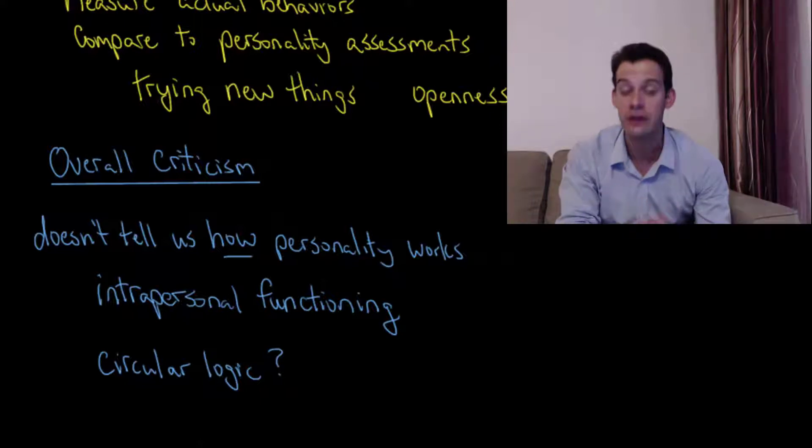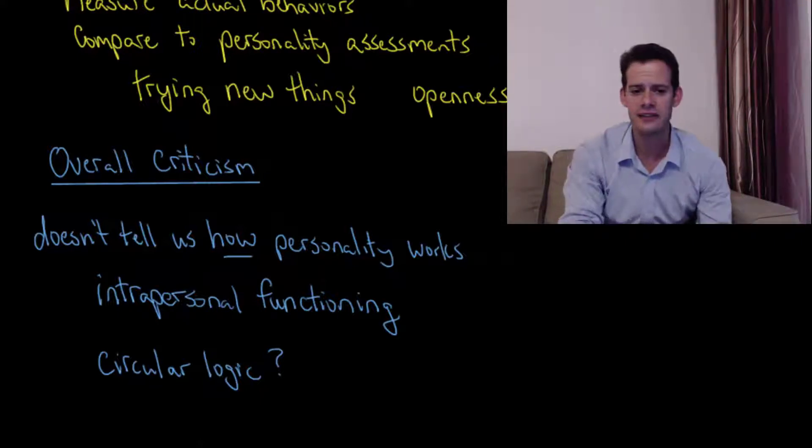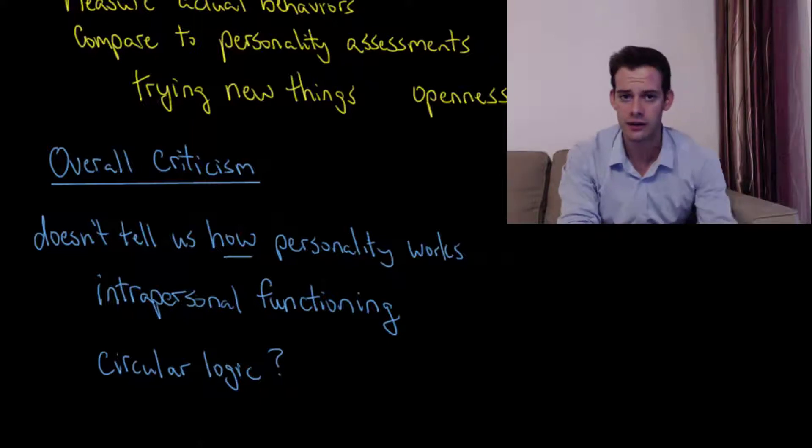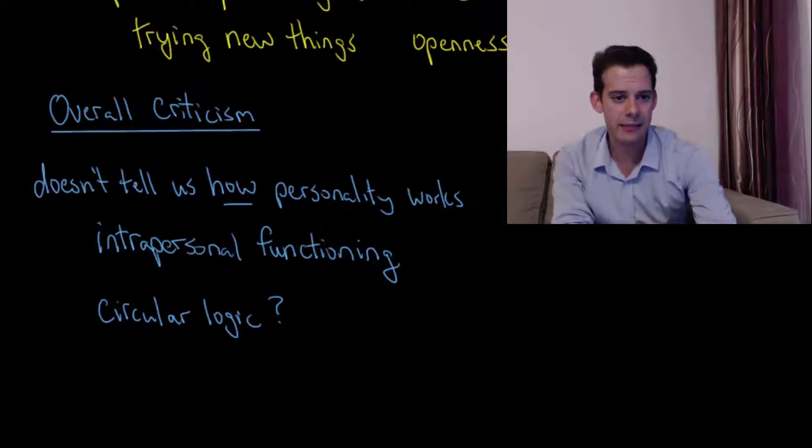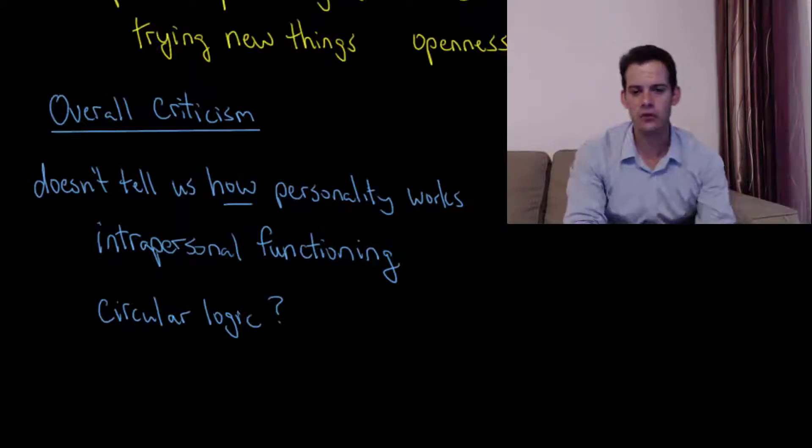So how does a person process information? How do they make decisions? How do they choose behaviors? Labeling traits doesn't actually explain any of that. And in some ways we could criticize trait-based assessment as using a sort of circular logic. So what do I mean by that? Well, the idea is we're sort of just labeling things and then saying that that label is the explanation for the things.